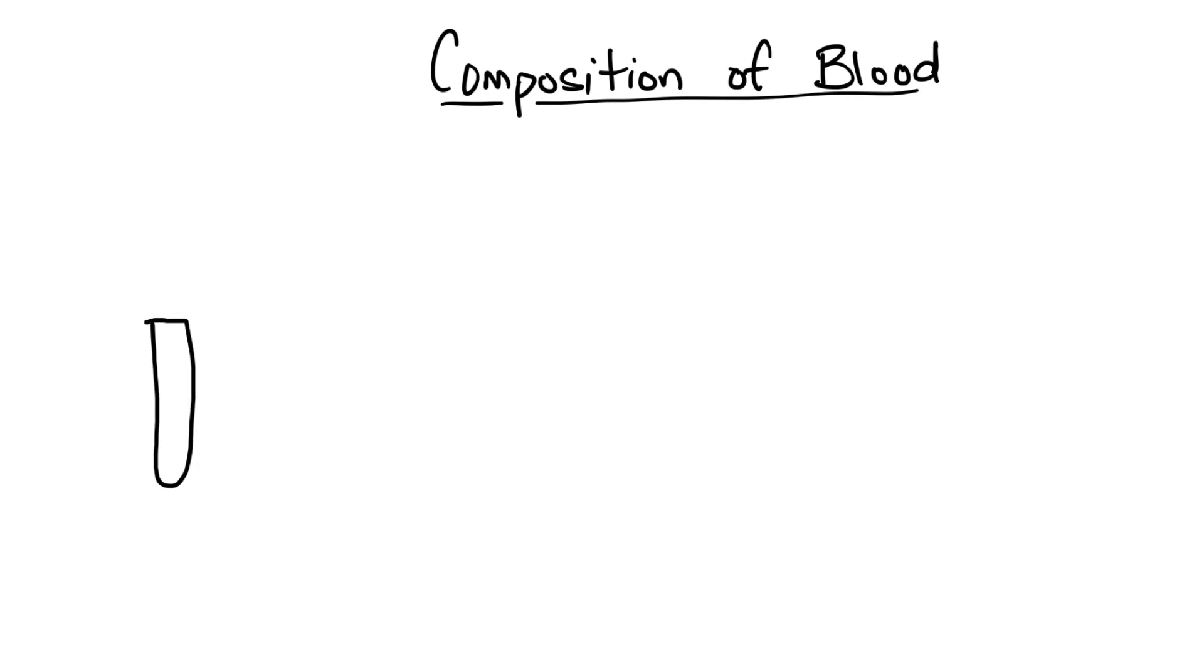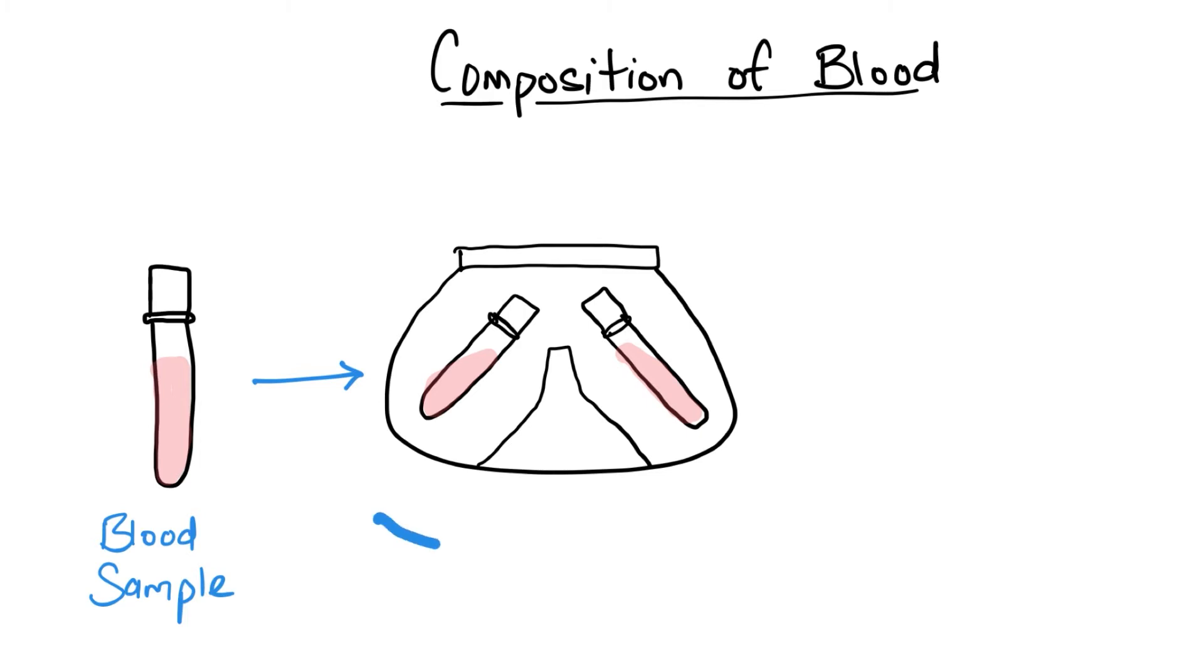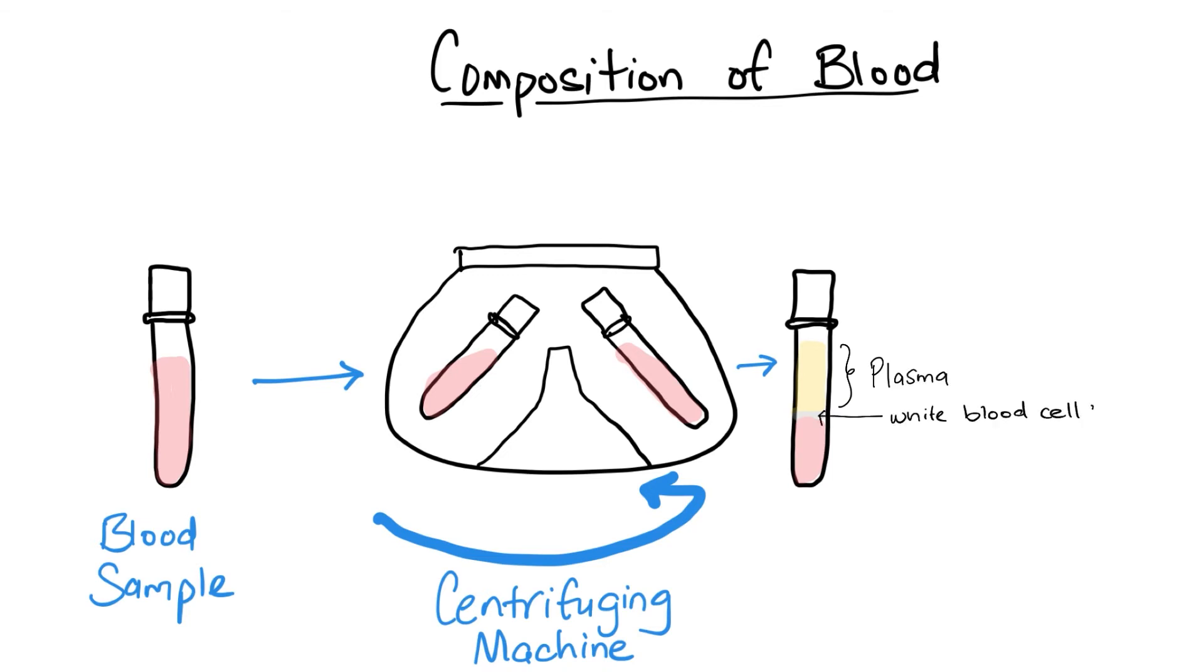To get an idea of what the blood consists of you would put a sample of blood in a test tube and then put it through a centrifugal machine. And the liquid in the blood would then separate according to how dense it is. And what we find happening is at the very top we have a liquid called plasma. In the middle we have white blood cells and at the very bottom we have the red blood cells.